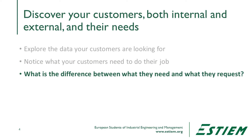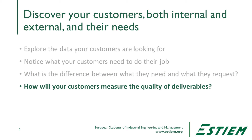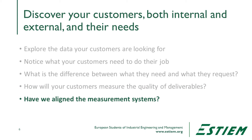What is the difference between what they need and what they request? Maybe they don't understand all of the things they actually need to do their job properly. Or we see their job differently than they see their job, so we're delivering something that doesn't meet their need. How will your customers actually measure the quality of your deliverables? Do they have a different measure than you have? Have we aligned the measurement systems so we're actually talking about the same thing and we can have agreement?